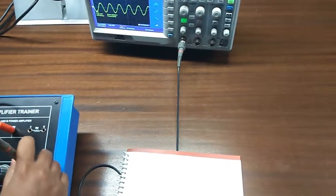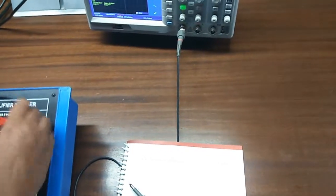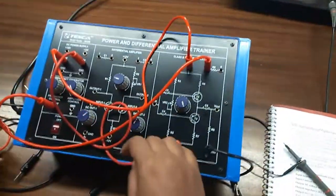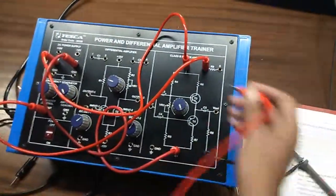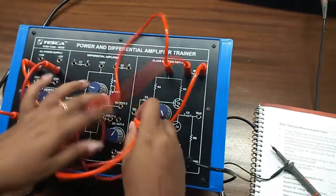Now, connect the AC signal to the class B amplifier through 100 ohm series resistance.